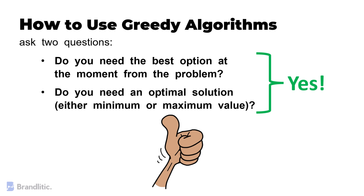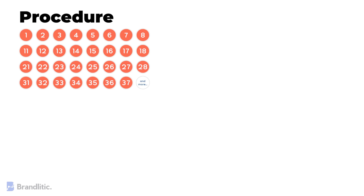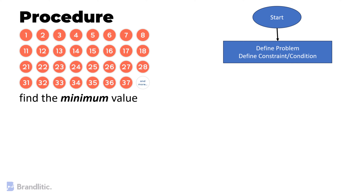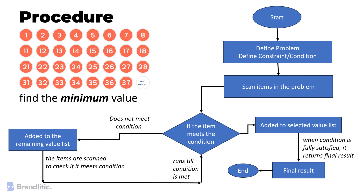Let's look into its procedure. Assume you have a problem with a set of numbers and you need to find the minimum value. You start by defining the constraint, which in this case is finding the minimum value. Then each number will be scanned and checked on each constraint, which serves as a condition to be fulfilled. If the condition is not true, it is added to the remaining value list, but if the condition is true, the number is selected and returned as the final solution.